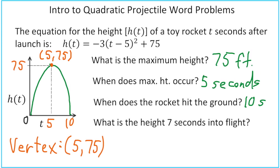Finally, what's the height 7 seconds into flight? I'm going to go ahead and erase our vertex here at the bottom so I got more space. So this question is basically asking, what is h of 7?